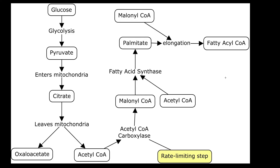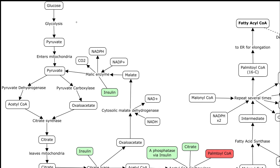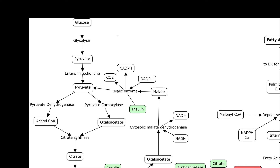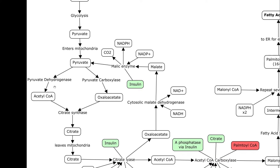Now that we've got the big picture, let's look at the details. Glucose goes through glycolysis to make pyruvate. Then it's going to enter the mitochondria and go one of two ways. Normally it's going to use pyruvate dehydrogenase to make acetyl-CoA to go into the TCA cycle.